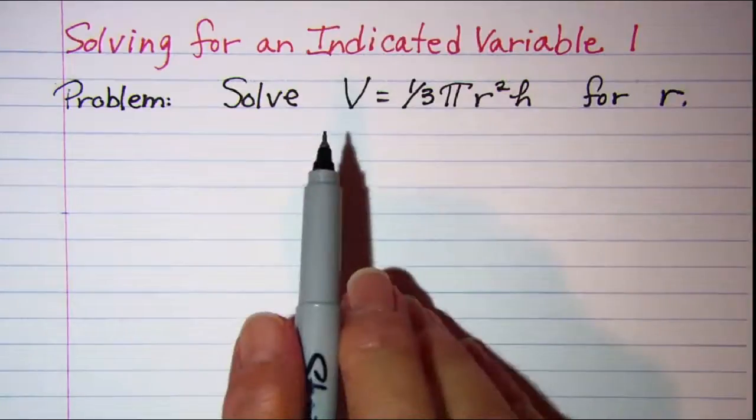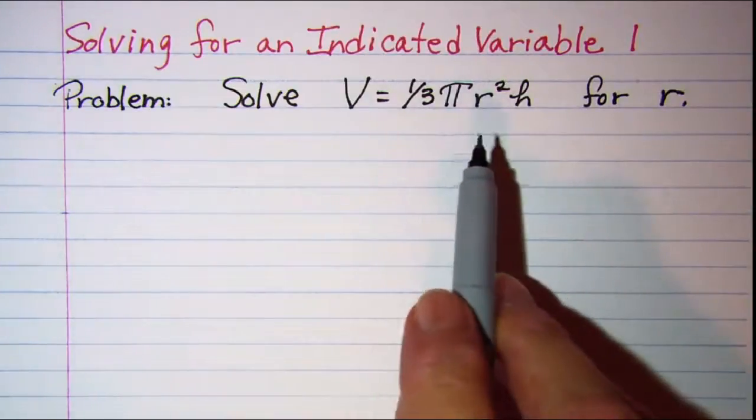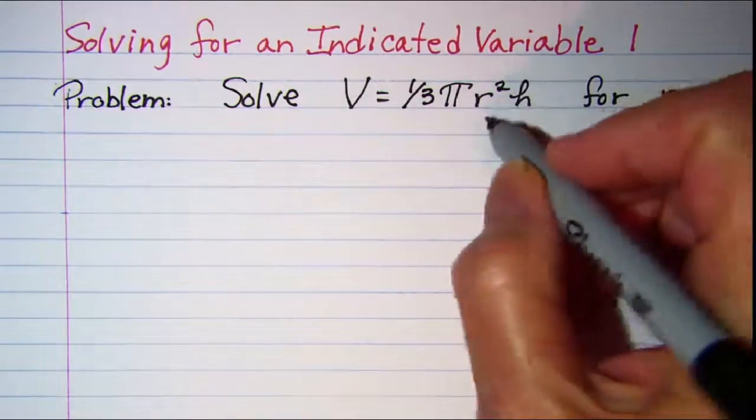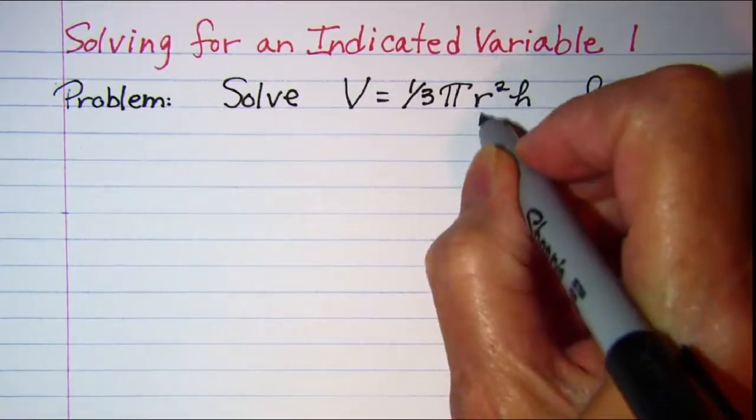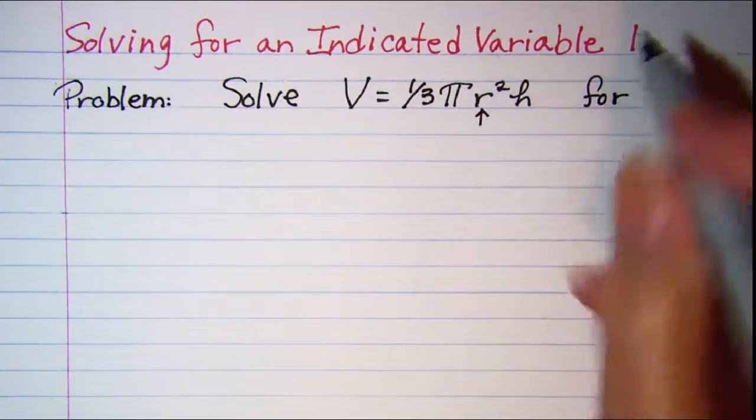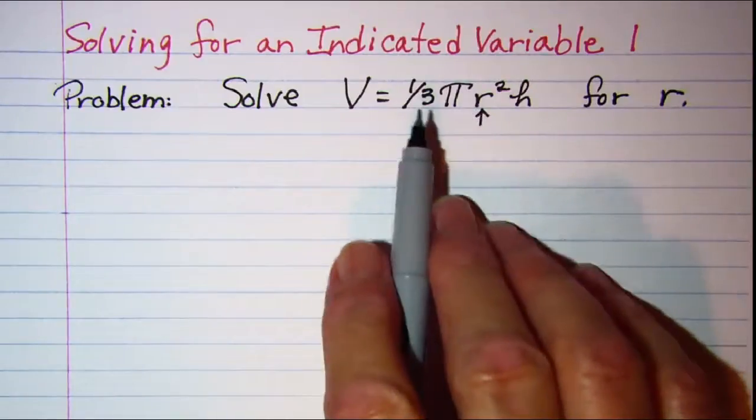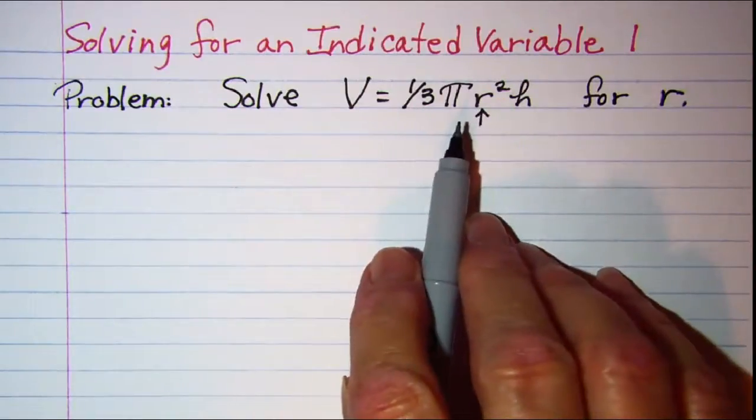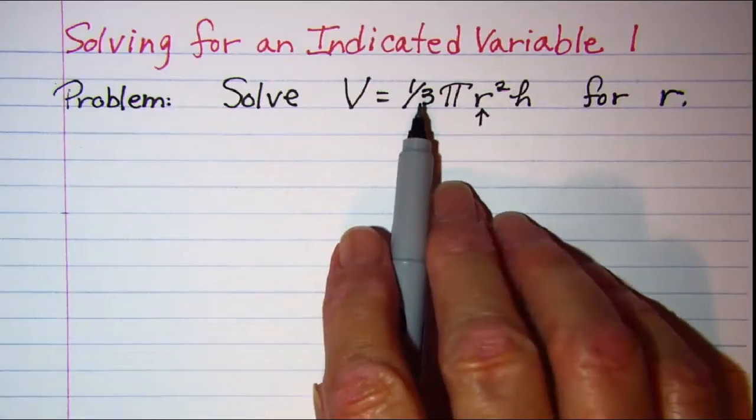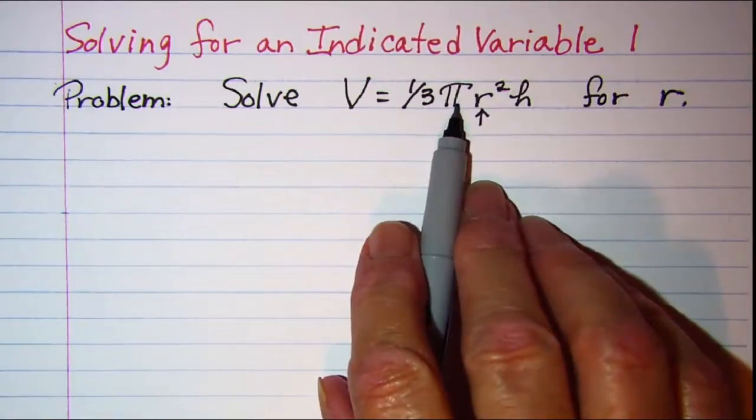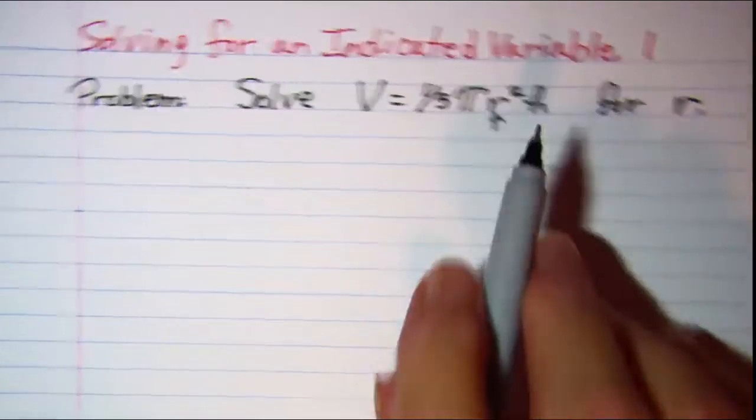Our first thing is to locate the variable that we're solving for. In this case we're solving for r and it's only in this one spot. My process will be to remove this one-third factor and the pi factor and the h factor first.